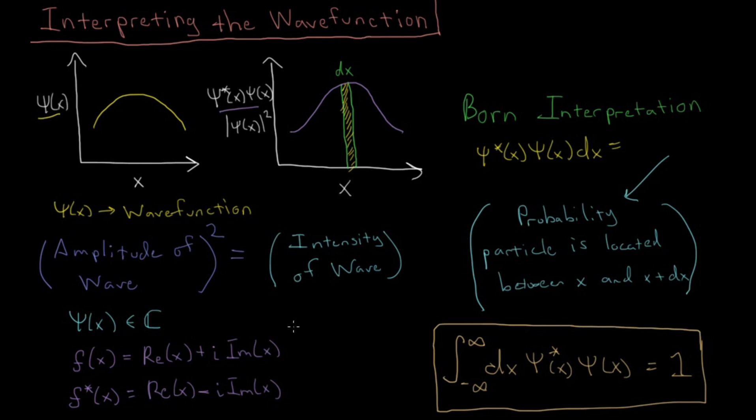And this gives us a condition for that. And this, you'll hear talked about a lot, is called normalization. So this will be called the normalization condition. Whenever the wave function obeys this condition here, it is said to be normalized.